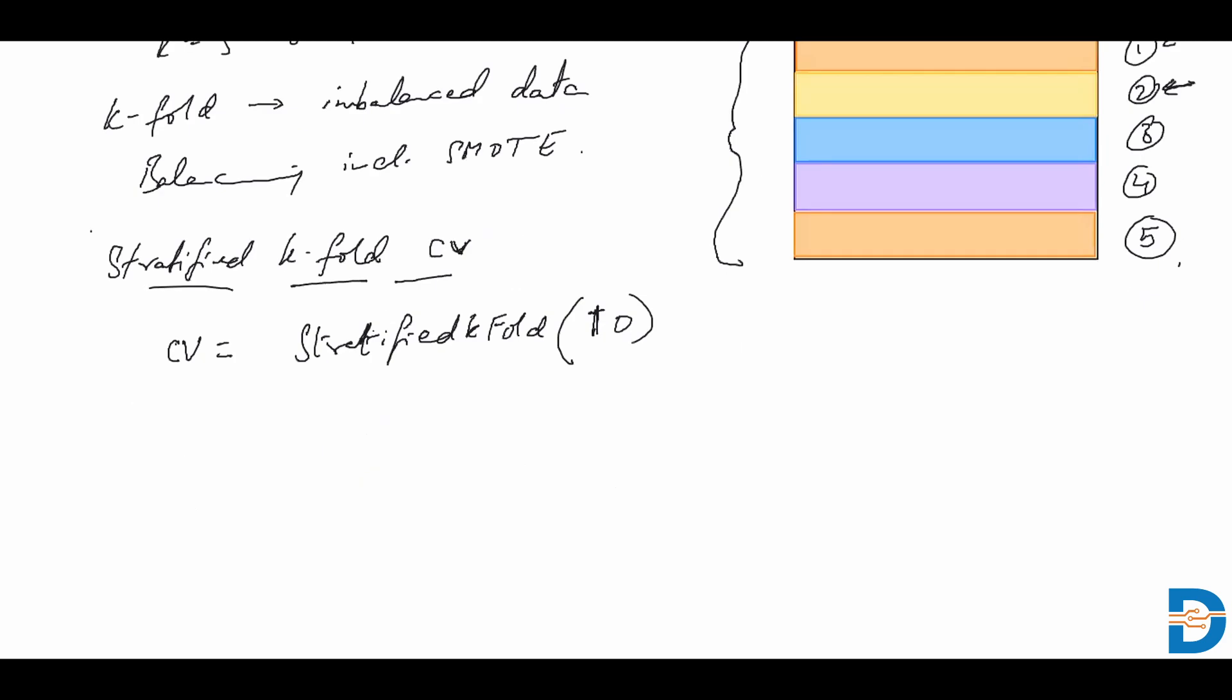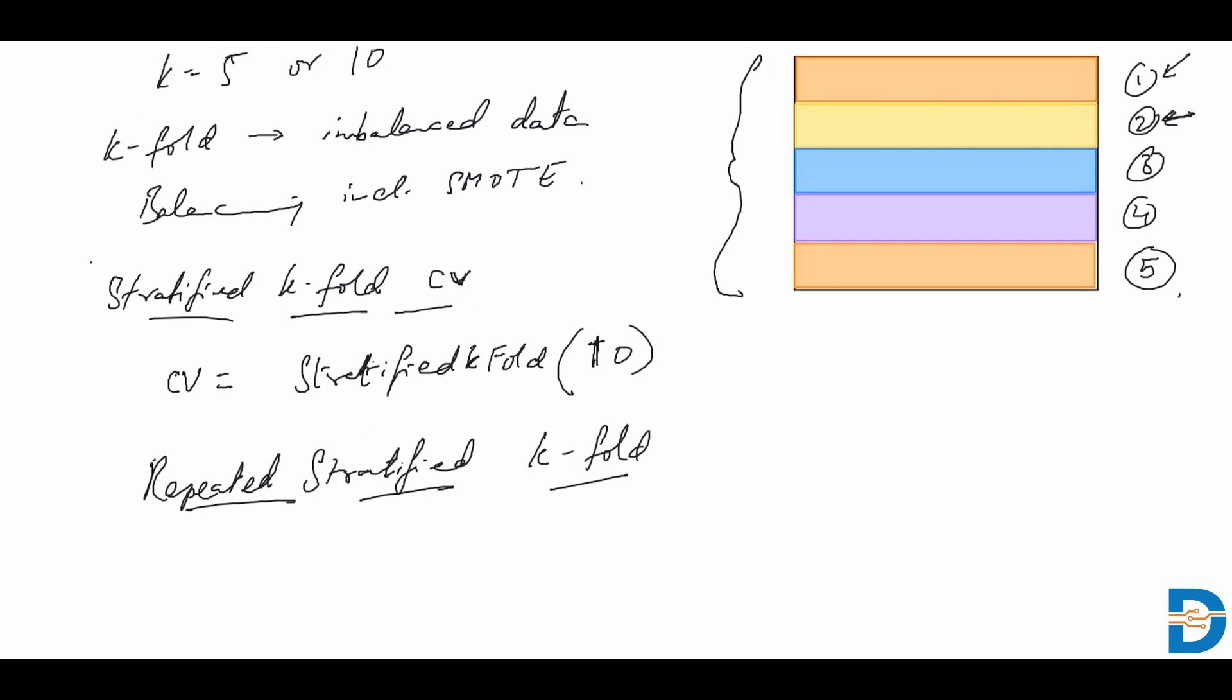Another method that we could be using is the repeated stratified k-fold. This is known as one of the more robust cross-validation methods during hyperparameter tuning.